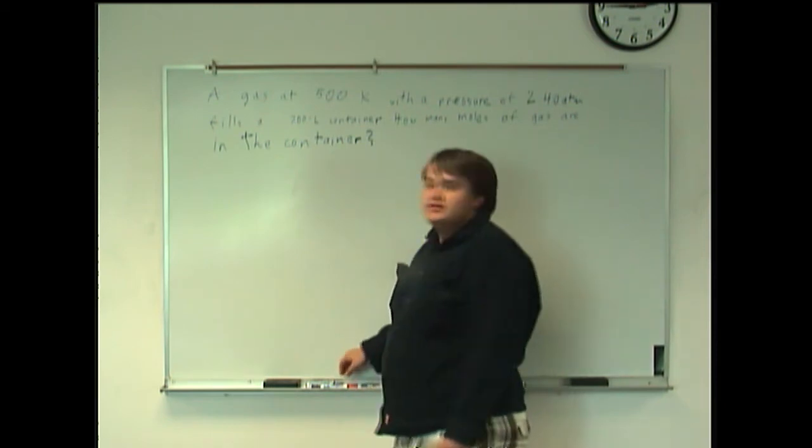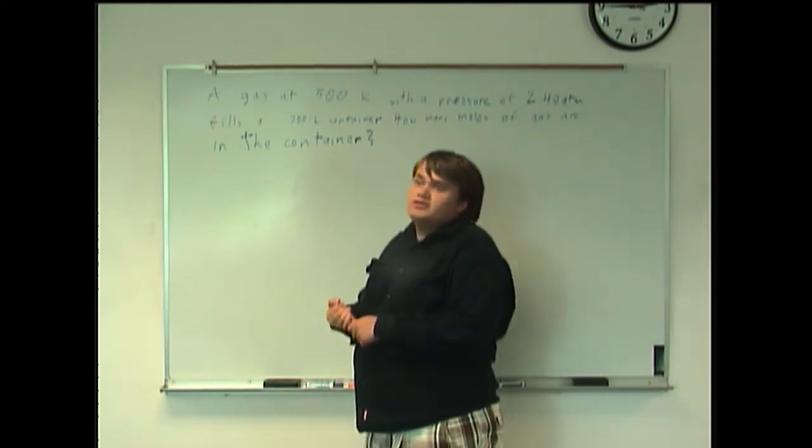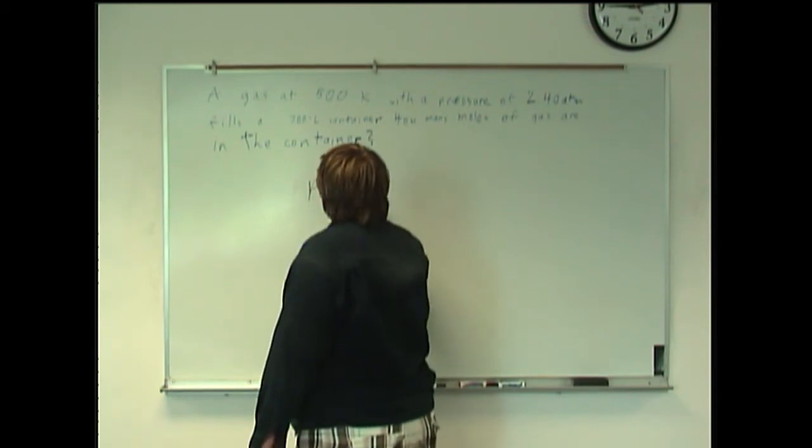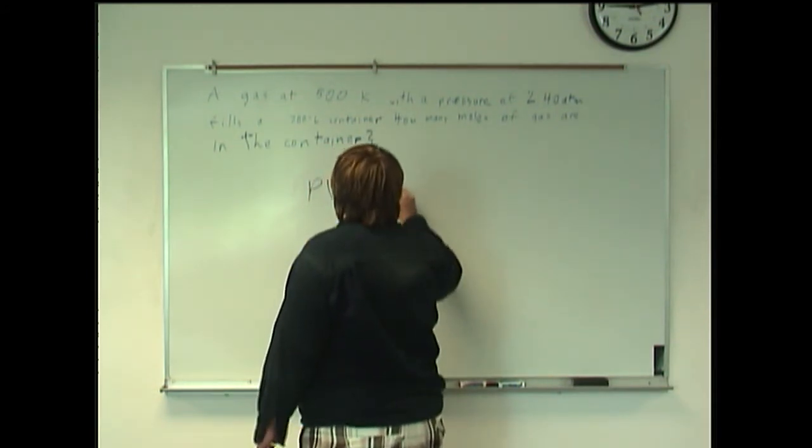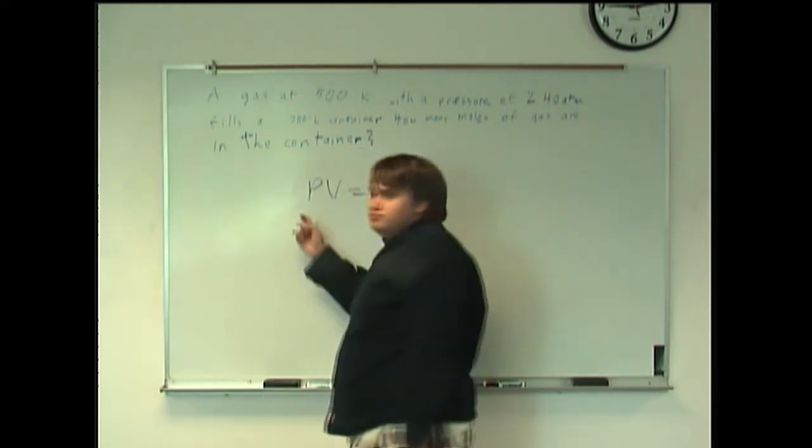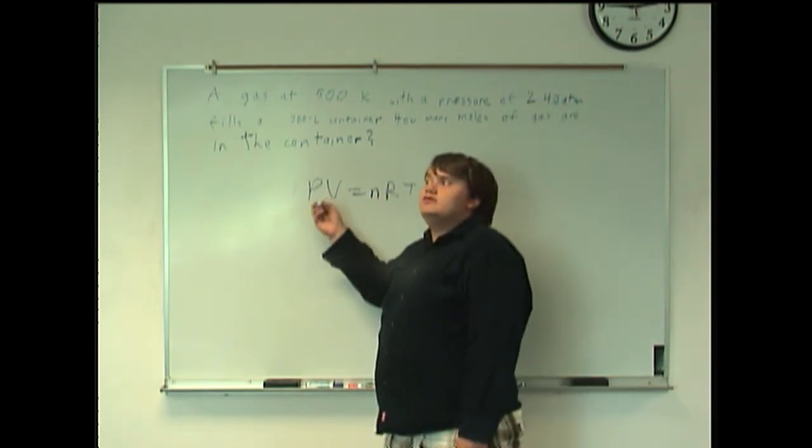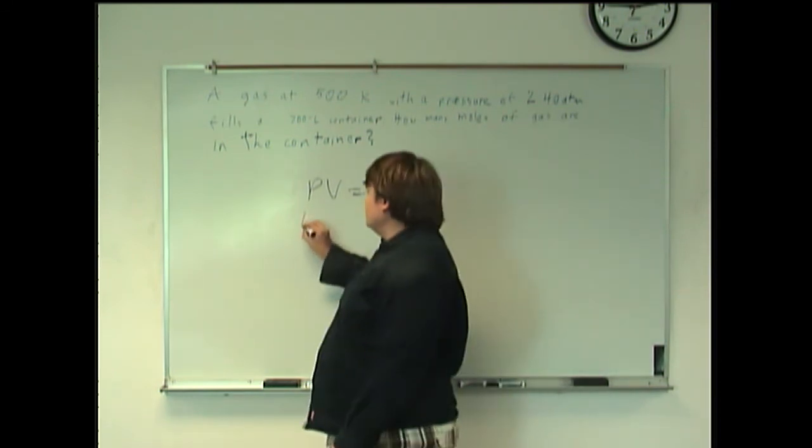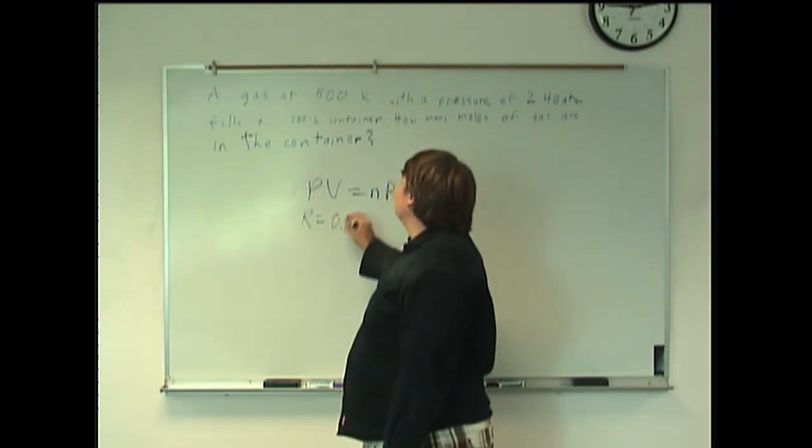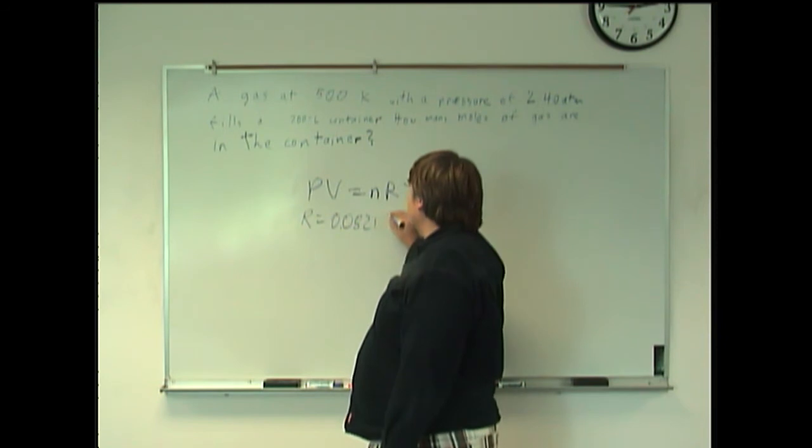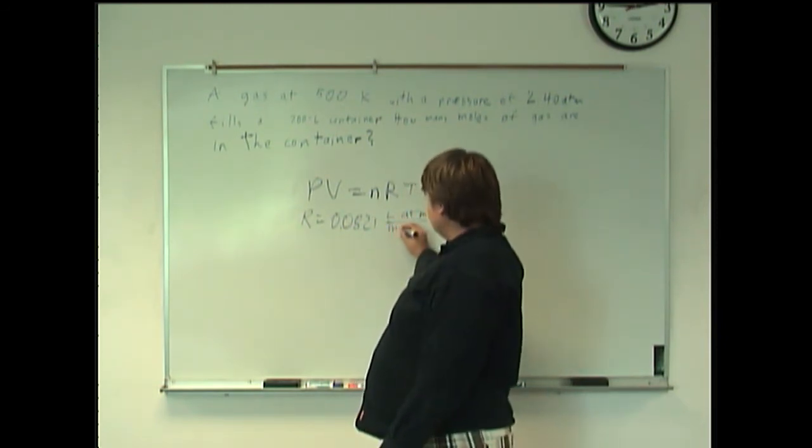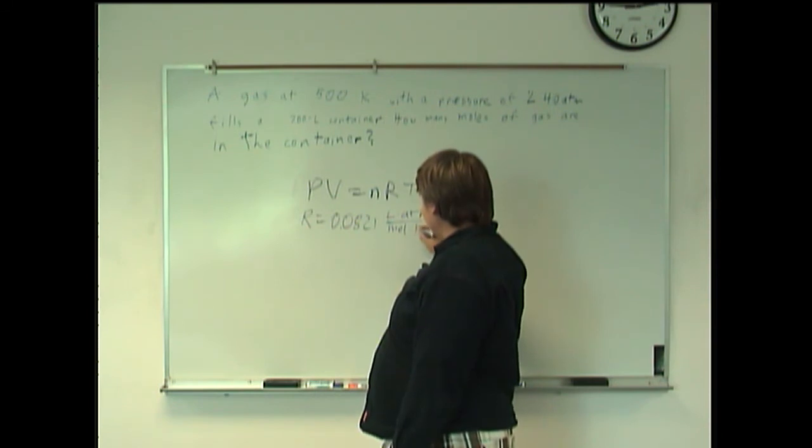Okay, so as you may recall, the formula for the ideal gas law is PV equals nRT. Pressure times volume equals moles times the gas constant times temperature, with R being 0.0821 liter atmospheres per mole kelvin.